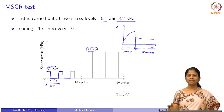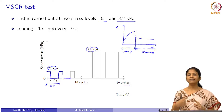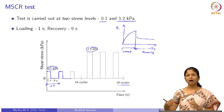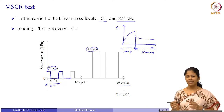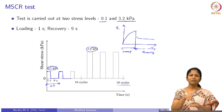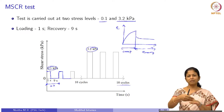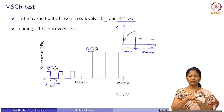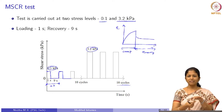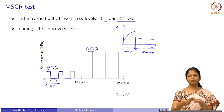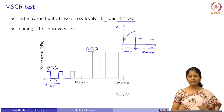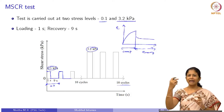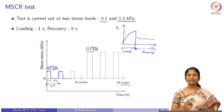Under repeated loading, we assess how much the material can recover. This relates to what happens in the field: a vehicle passing loads the material, and once the vehicle leaves the influence zone the strain starts to recover. Then another vehicle enters, causing loading again, followed by recovery until the next vehicle arrives. This test is designed to capture the relative phenomena that happen in the field.